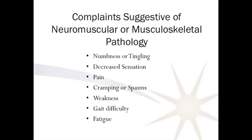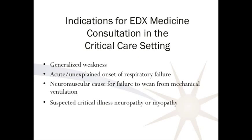The complaints patients have include numbness, tingling, pain, decreased sensation, cramping spasms, weakness, gait difficulty, or fatigable weakness — these are the symptoms that result in a test being done. We're also asked to do EMG and nerve conduction studies in the critical care setting where patients have generalized weakness, difficulty weaning from mechanical ventilation, an acute or unexplained onset of respiratory failure, or suspected critical illness neuropathy or myopathy.